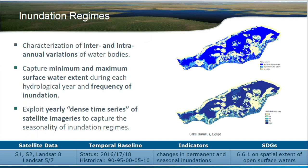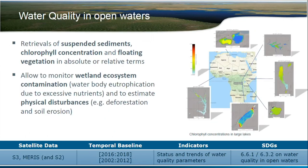Another product type is inundation regimes, which tells us how often a given area was flooded in a specified time period, as well as the minimum and maximum surface water extent — this tells us something about the wetland health. There's also the water quality of open water bodies, covering suspended sediments, chlorophyll concentration, and floating vegetation. This is based on medium-resolution data mostly — Sentinel-3 and MERIS at 300 meter resolution — but it can also be performed using Sentinel-2 at 10 or 20 meter resolution, allowing us to monitor sources of pollution within those water bodies.